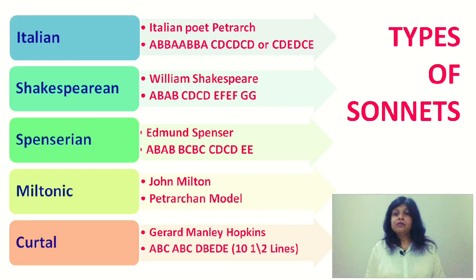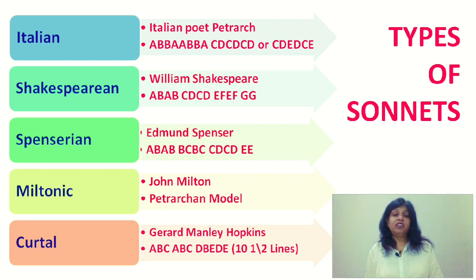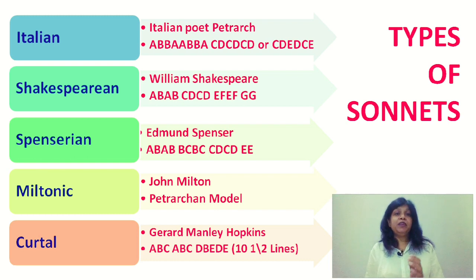Next we move on to the types of sonnets. There are generally 6 types of sonnets. First are the Italian sonnets, written by Petrarch. These sonnets were very important because Petrarch is the one who brought this sonnet tradition. He wrote them in Italian language, and the rhyme scheme he followed was A, B, B, A, A, B, B, A, C, D, C, D, C, D.